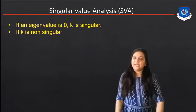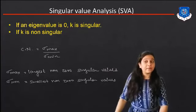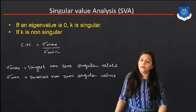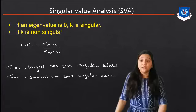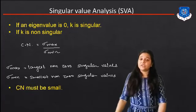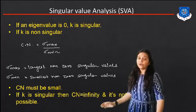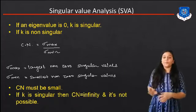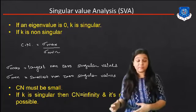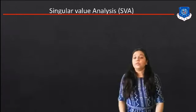If the eigenvalue is zero, K is singular. If K is non-singular, that is the second condition. We have to find the value of Cn, which equals Delta max upon Delta min, where Delta max is the largest non-zero singular value and Delta min is the smallest non-zero singular value. We must try to keep Cn small. If K is singular, then Cn is infinite, which is not possible for all MIMO systems.